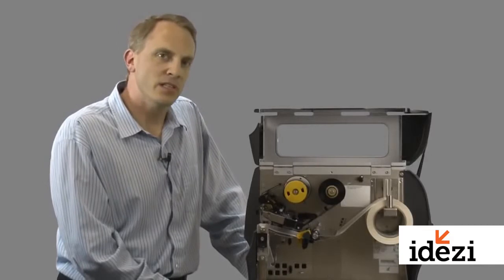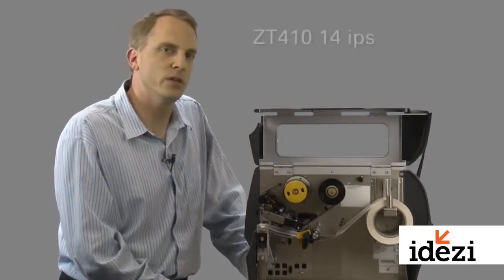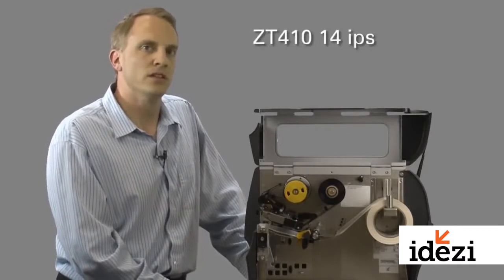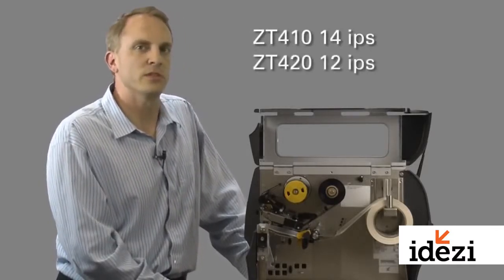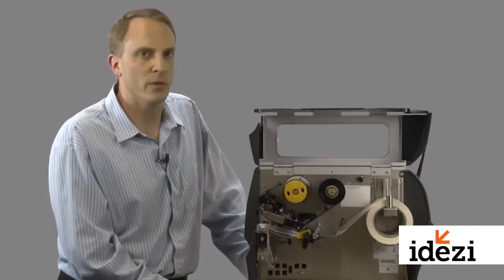On top of that, the basic performance has improved, with the ZT410 sporting a new top speed of 14 inches per second, and the ZT420 of 12 inches per second, not to mention an also vastly increased printer and user memory.